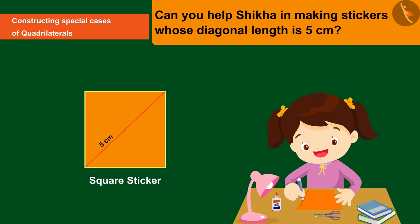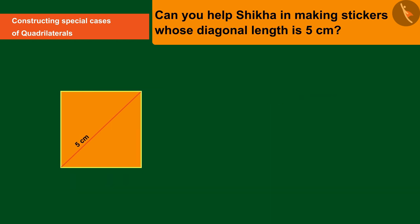Let's write the characteristics of the square diagonal as follows. Both diagonals in the square have equal measurement. The diagonals of a square bisect each other at right angles.